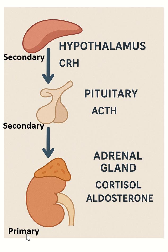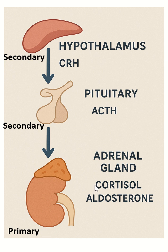In primary adrenal insufficiency, remember, there is a defect in both cortisol and aldosterone hormones. In secondary adrenal insufficiency, only cortisol is low, because the primary stimulus for aldosterone is angiotensin 2, which comes from the renin-angiotensin system. So if a patient has primary adrenal insufficiency, give replacement for both cortisol and aldosterone.